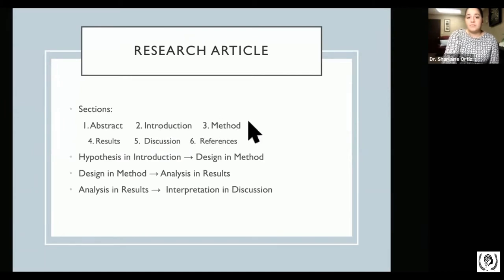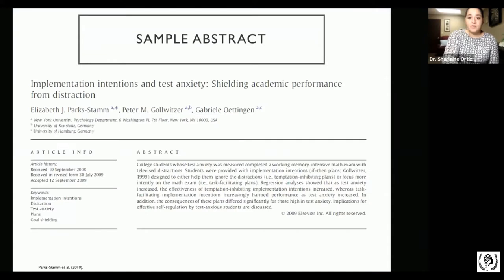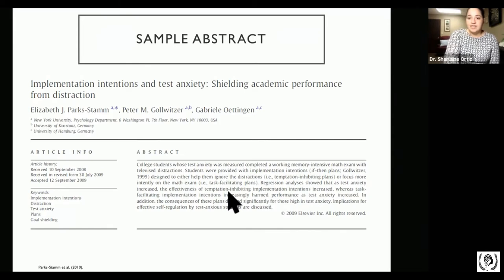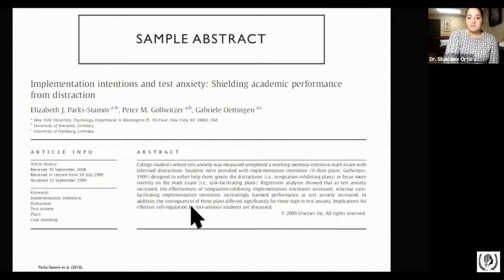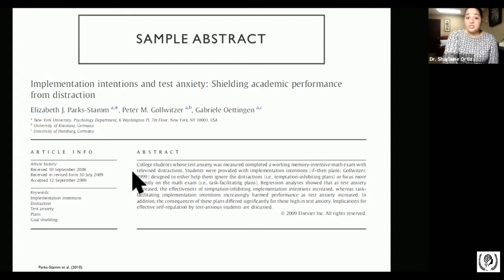Going back to the parts of an article, notice how the abstract is showing you a summary of all these parts — who was involved, what measurements were used, and the results. They used a regression analysis to measure test anxiety. The review discusses implications for effective self-regulation by test-anxious students. In just a couple of sentences, you're able to understand whether or not this article is worth your time.